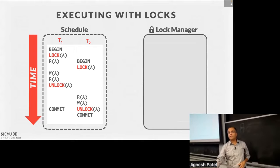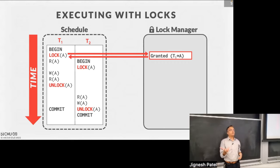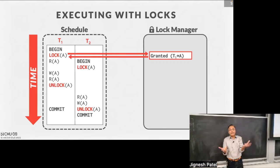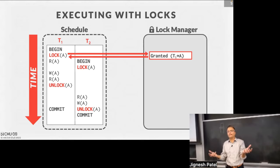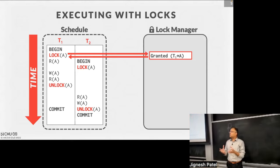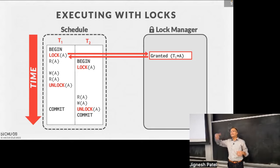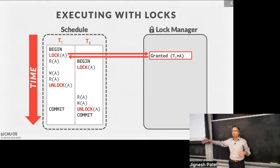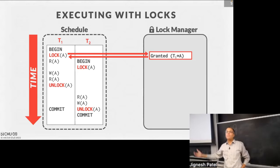There's a lock manager which maintains a data structure and gets requests: here's the object I want to lock, here's the mode — exclusive and shared — and here's who I am. It's often organized as a hash table on the object ID being locked, and it keeps track of all lock holders and pending requests. When a second lock request comes in for the same object A already held by T1, the lock manager will say it can't grant that request. T2 gets blocked until the unlock request from T1 comes in, then T2 can get the lock.